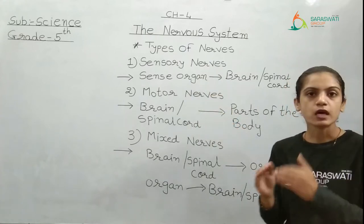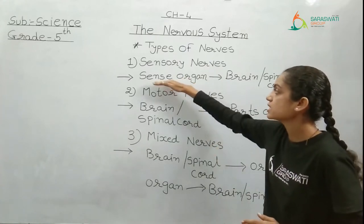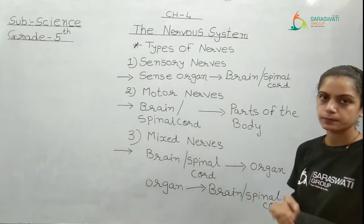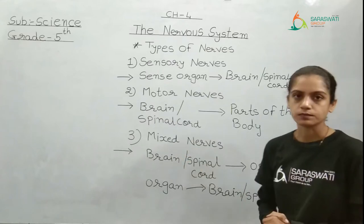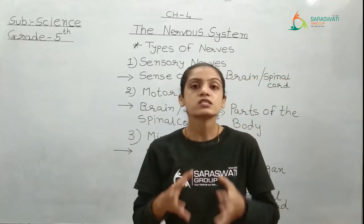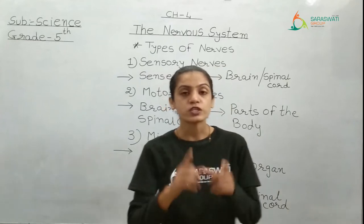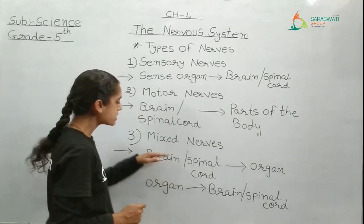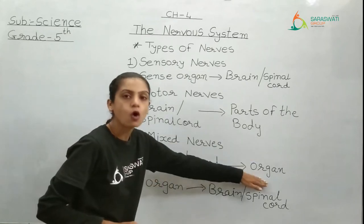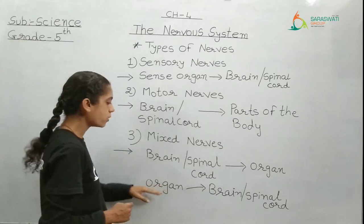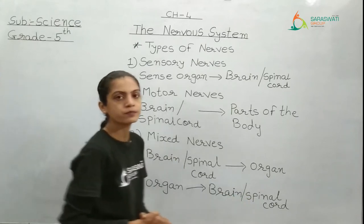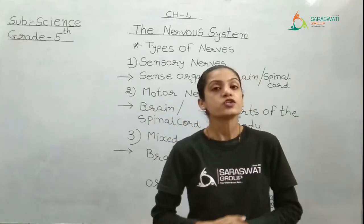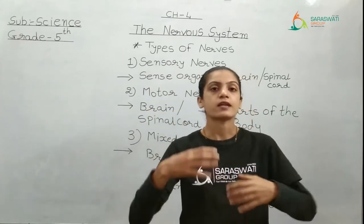Comparing these two nerves, one type passes messages from organ to brain and the other passes messages from brain to organ. Then we also have the third type: mixed nerves. These nerves can work both ways — they can pass messages from brain or spinal cord to the organ, and also carry messages from organ to brain or spinal cord. These three types of nerves present all over the body help us to feel, taste, and do many things.